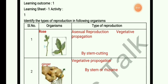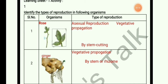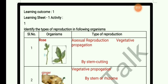The different parts of the plant are flowers, roots, stem, and leaf — they are all called vegetative parts. In asexual reproduction, only a single parent is involved. The different methods of asexual reproduction are vegetative propagation, budding, fragmentation, and spore formation. No flowers are required for these methods.